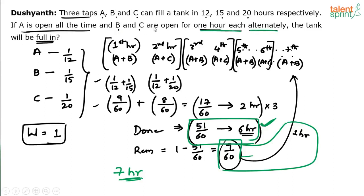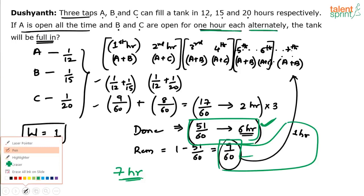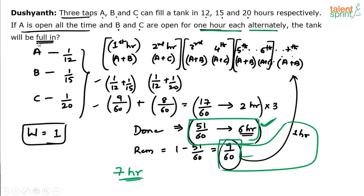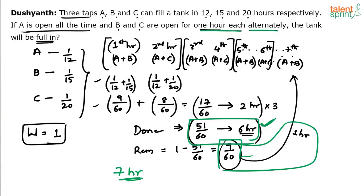If options were not given, we assume B starts first. But if options include 'cannot be determined,' that answer is strictly correct, since we don't know whether the sequence is A+B then A+C, or A+C then A+B. So the final answer here, assuming B starts first, is 7 hours.